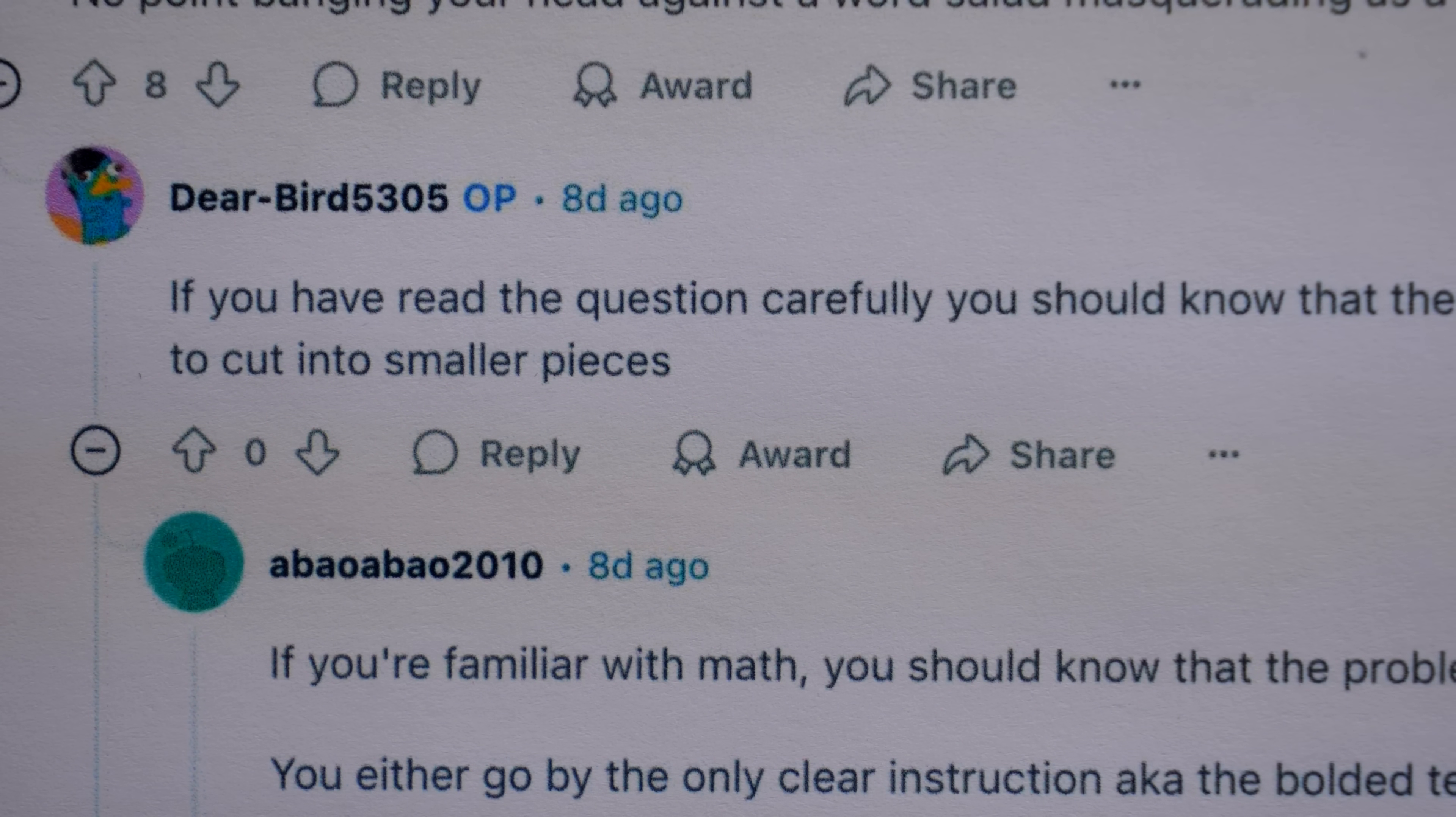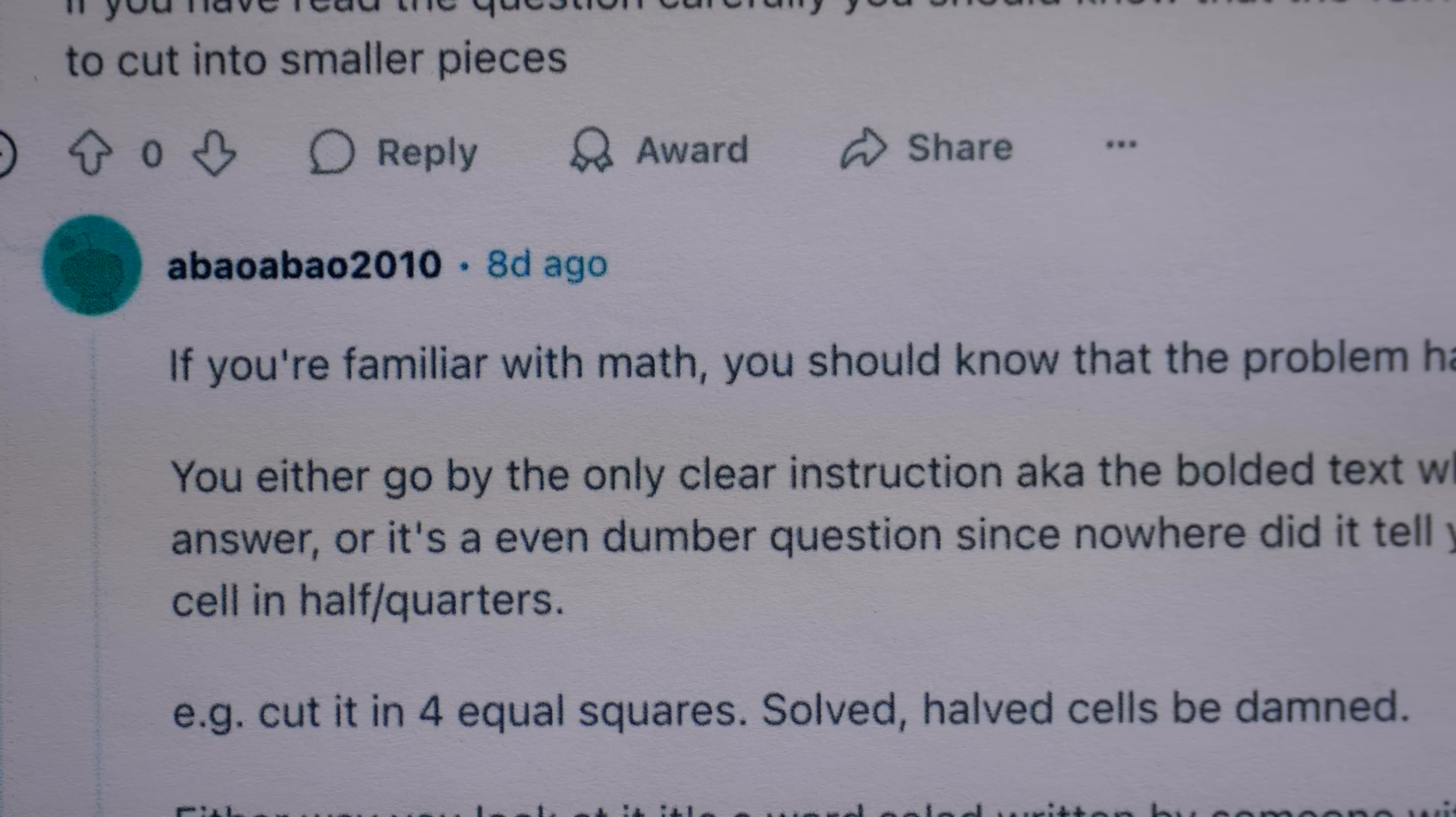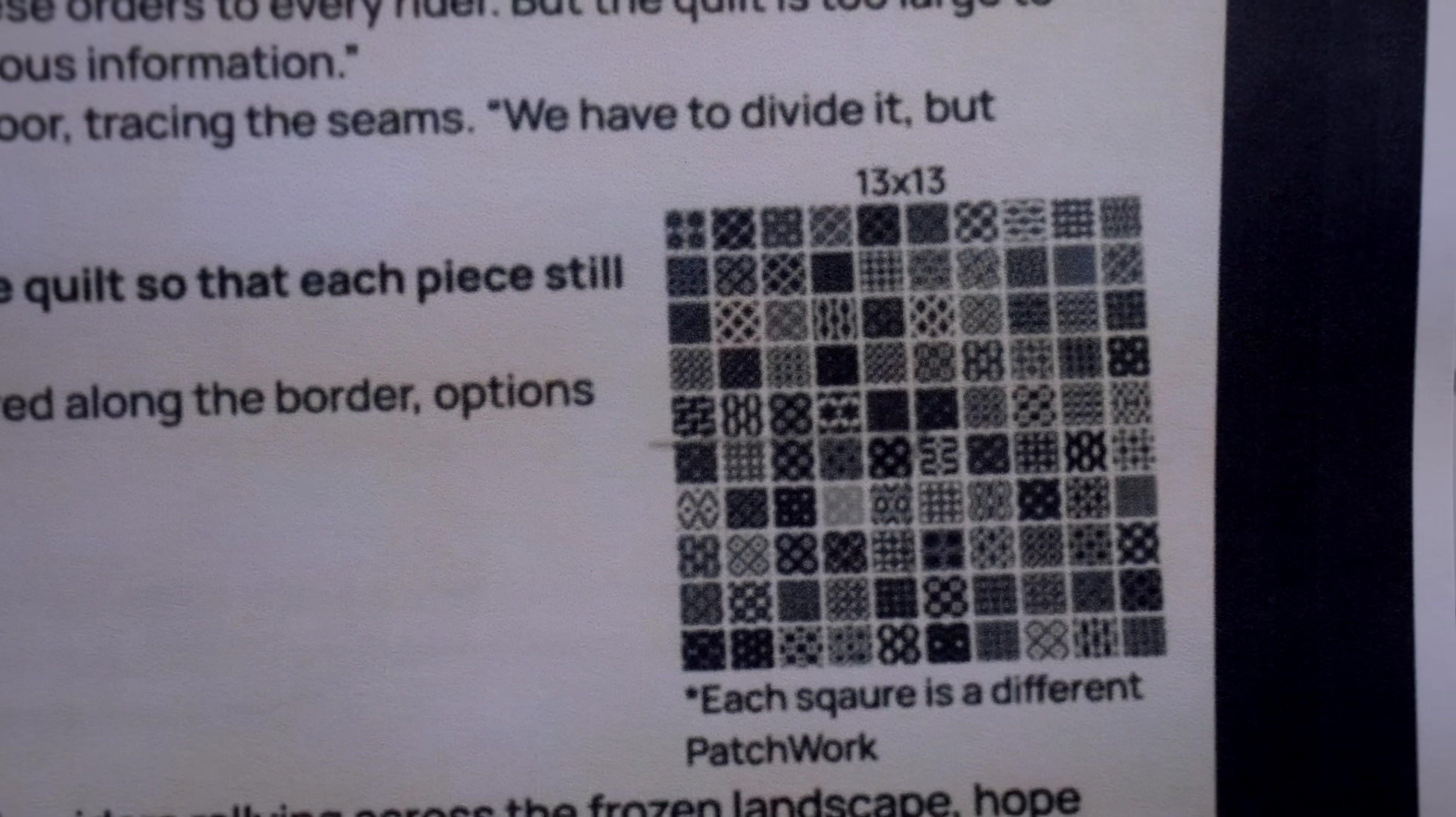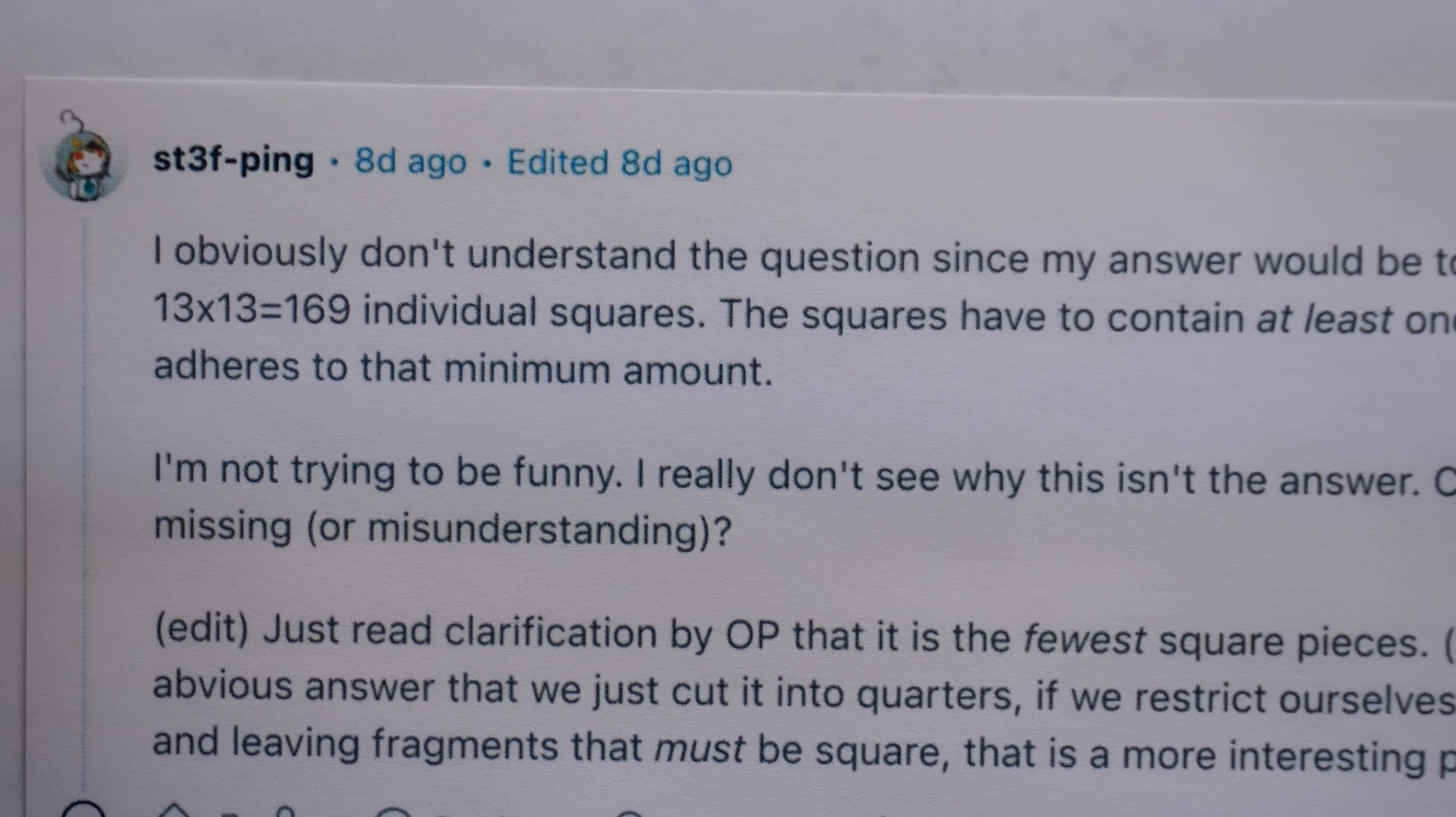The OP replies, if you had read the question carefully, you should know that the 13x13 quilt is too large, it's too heavy, and you need to cut it into smaller pieces. But the commenter bites back, if you're familiar with math, you should know that the problem has to list clear conditions. This fella also goes on to mention how the problem, I think, tried to say this, but it didn't. It didn't say that you can't cut cells into halves or quarters, so we could cut right through the seams and still just cut it into four squares if we want to, but I'm pretty sure they don't want us to do that. Of course, if they did, then four would be a valid option. Someone else said, I obviously don't understand the question. None of us do.